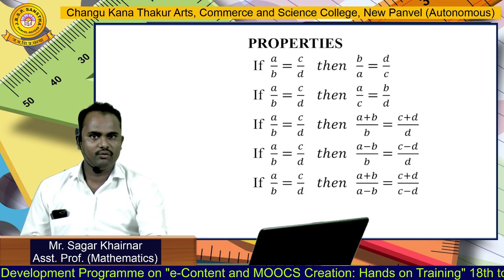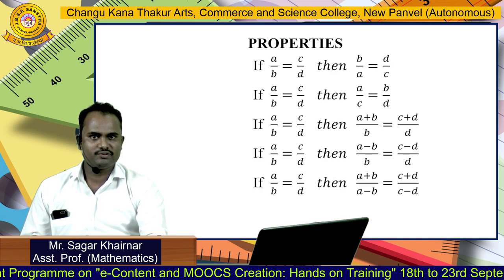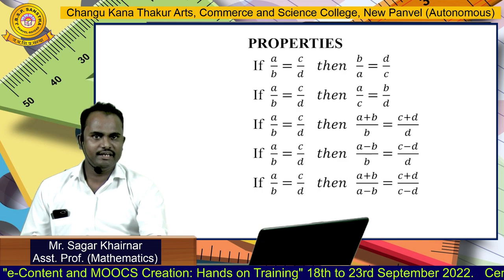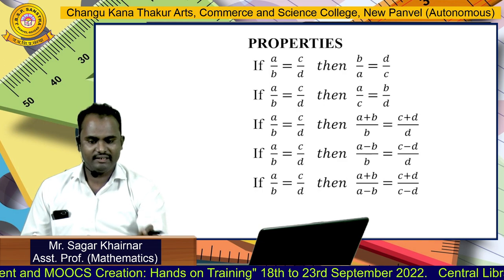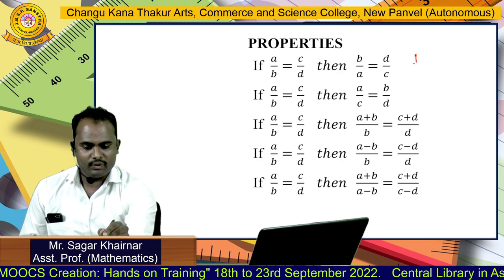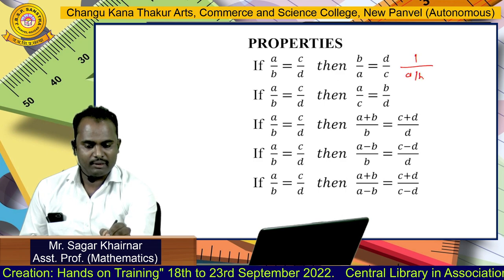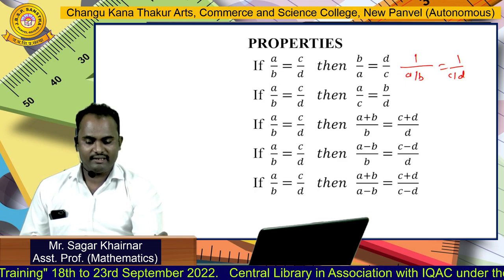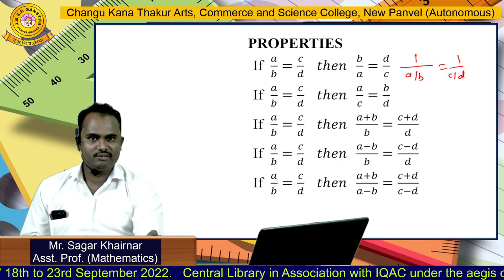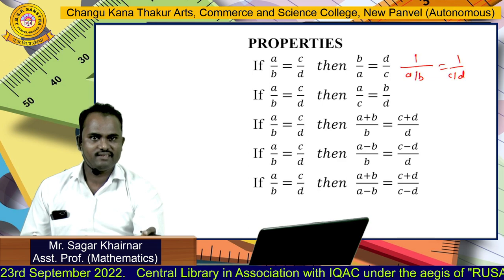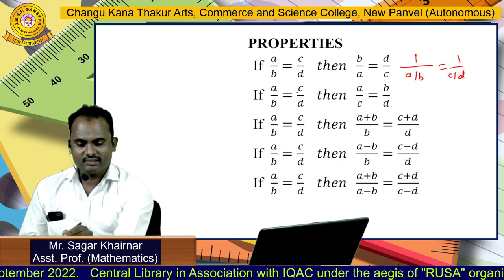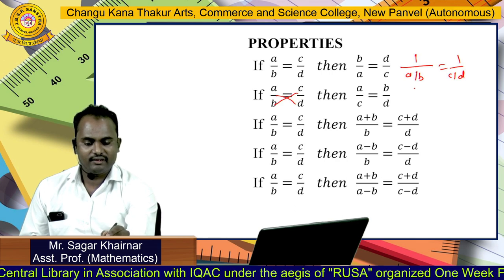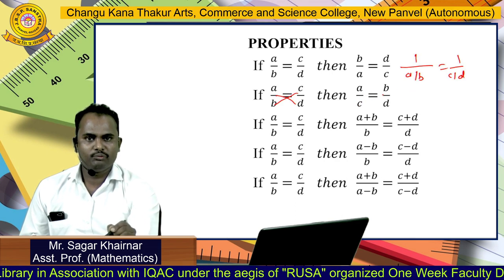If A divided by B is equal to C divided by D, then we can write their reciprocal as B divided by A equal to D divided by C. Another property: if A by B equals C by D, then we can cross multiply these two terms to get A divided by C equal to B divided by D.